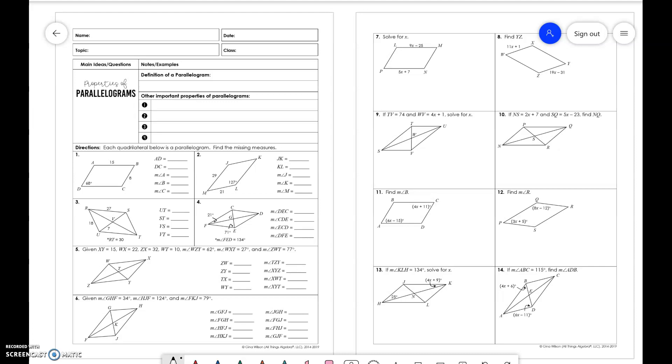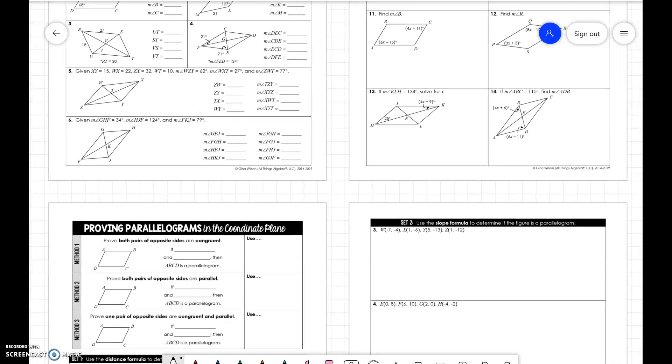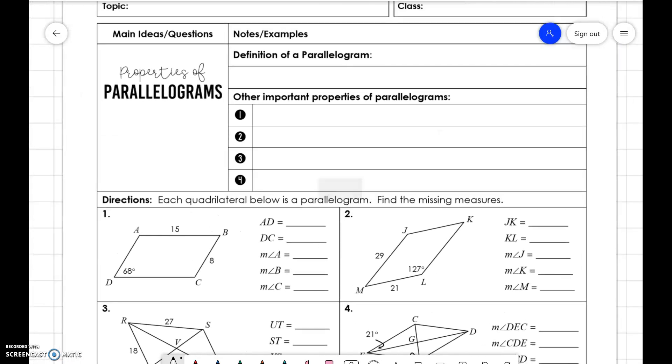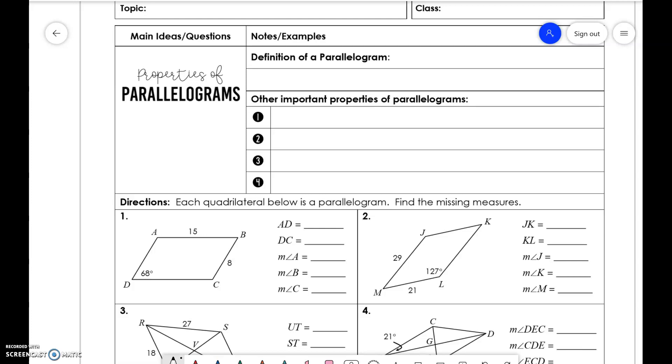Okay, hey everybody. We're going to talk about parallelograms today. So we're going to do these set of notes and we're going to do proving parallelograms in a coordinate plane. Alright, so what is a parallelogram? It is a quadrilateral in which both pairs of opposite sides are parallel.